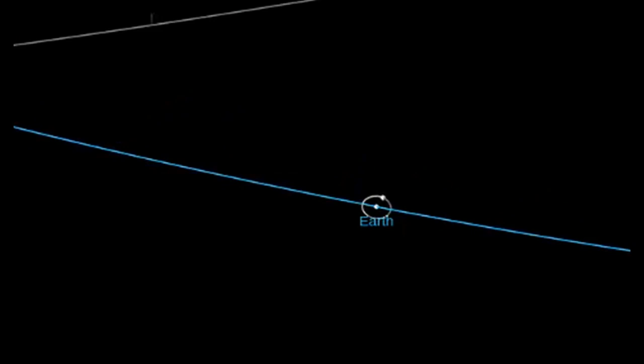It's going to have a close encounter with Earth on July 24th, here in a couple days, just after midnight UTC. And it's going to come within a lunar distance of Earth, meaning that it's going to come within the distance between Earth and the Moon.